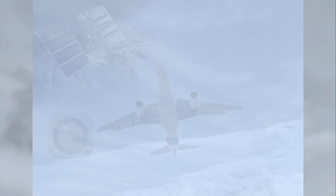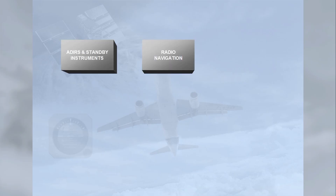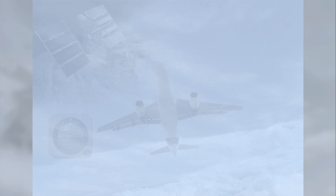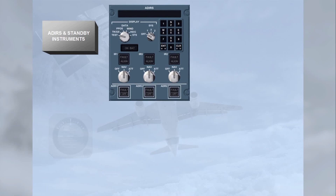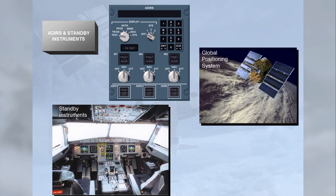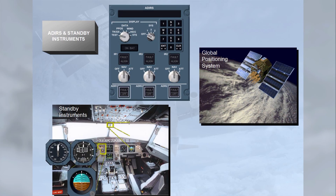The navigation system is divided into three main groups: Air Data and Inertial Reference System, ADIRS, plus standby instruments; radio navigation; and additional navigation systems. There are several subsystems within each group. The first group includes Air Data Inertial Reference Units, ADIRU, Global Positioning System, GPS, and standby instruments.